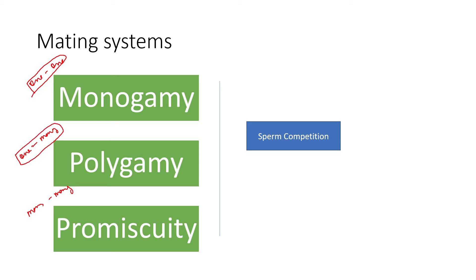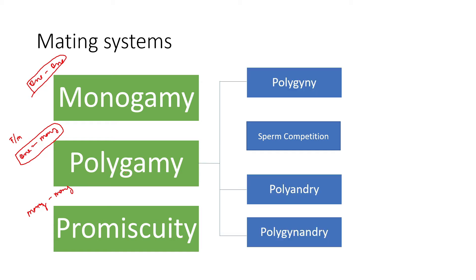To clarify: monogamy is one-on-one, where one female is paired with one male throughout their life. Polygamy is where one individual mates with many individuals, either male or female. Promiscuity involves open sexual structures with no restriction on who mates with whom.